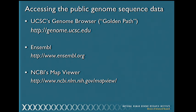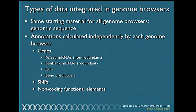Before getting into the browsers themselves, let me go over a couple of details about the types of data you're going to see. All the browsers start with the same information—genomic sequence—though for the most part it's the same sequence, but not always. Each of the three browser teams independently annotates the genome with relevant information. Those annotations can differ. The types of things they annotate include genes using RefSeq mRNAs, genomic mRNAs, other transcript sequences, ab initio gene predictions, SNPs, and non-coding functional elements.